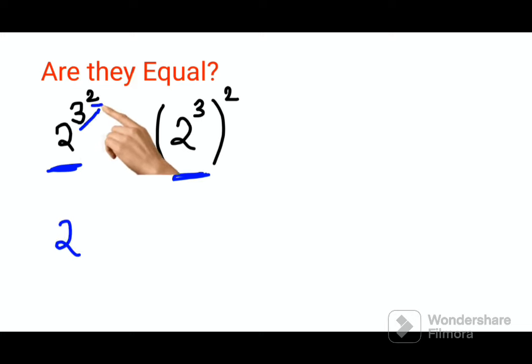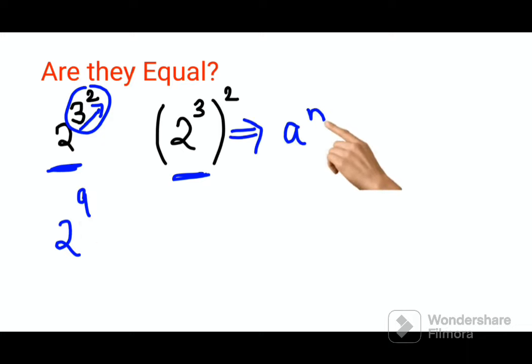We will first solve 3 raised to 2, which is 9. This is similar to the exponent law: a raised to m, the whole raised to n, equals a raised to m times n.